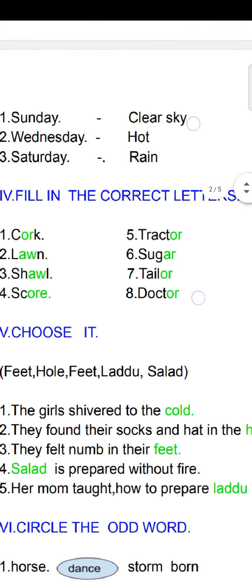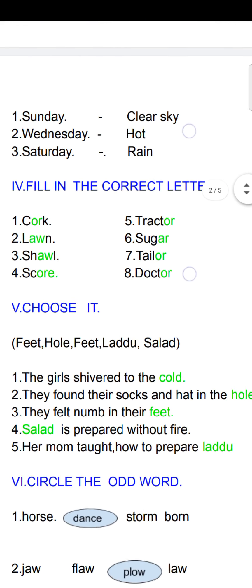Next, fill in the correct letters. Here, I have given answers in green color. During your exam time, in that green color place, a dash will come. You have to correctly write the letters. First: cork, C-O-R-K. Second: lawn, L-A-W-N.